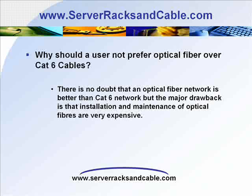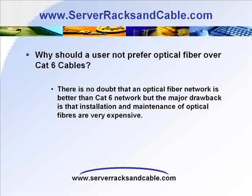Why should a user not prefer optical fiber over Cat 6 cables? There is no doubt an optical fiber network is better than a Cat 6 network, but the major drawback is that installation and maintenance of optical fibers are very expensive. The cost of optical fibers with optical transceivers is twice as much as that of an equivalent network with Cat 6 cables. The setting up of copper cabling as in Category 6 is easier and can be done with straightforward gear and methods. Another feature of copper cabling is that it can support data terminal equipment power standards under development by IEEE. For most situations, Category 6 cable is a less expensive choice.